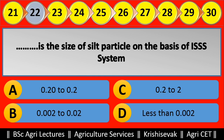Question 22: Blank is the size of silt particle on the basis of the ISS system. Options are: (a) 0.20 to 0.2, (b) 0.002 to 0.02, (c) 0.22, (d) less than 0.002. Right answer is 0.002 to 0.02, option B.